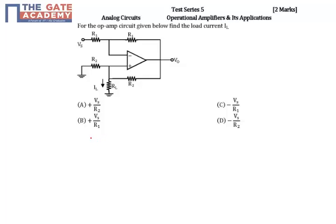In the given problem, we need to find the load current IL. So first you find out the output voltage, then you write KCL, and then you'll get the load current. If you see here, this is a combination